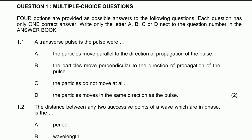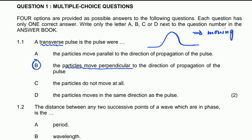Question one is generally multiple choice. Question 1.1 asked: 'A transverse pulse is the pulse where...' and gave you options. All you have to know is the definition of a transverse pulse. A transverse pulse is one where the particles move perpendicular to the direction of propagation of the pulse. The correct answer is A. To recap: if the pulse is moving in one direction, the particles in the medium move up and down — perpendicular to the motion of the pulse.